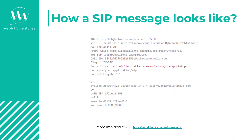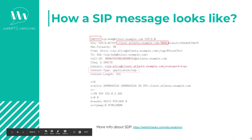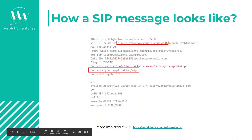As we can see, the protocol used is TCP, and the server that we are sending this SIP message to is client.atlanta.example.com. We can also see that it's using port 5060, which is typically the default port for TCP SIP connections.